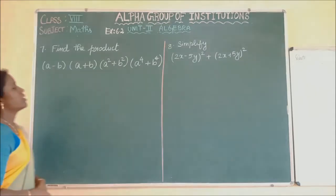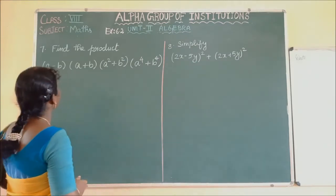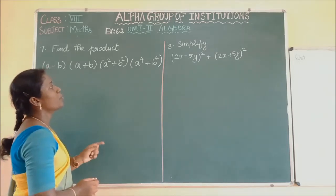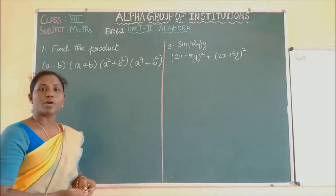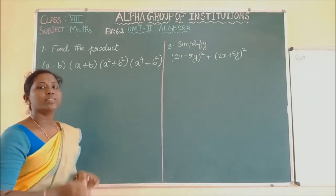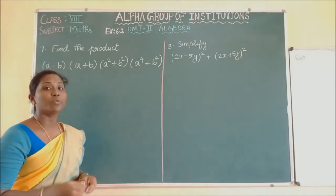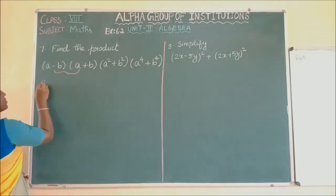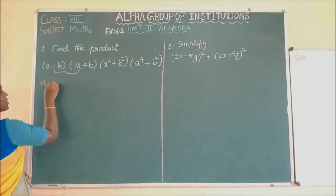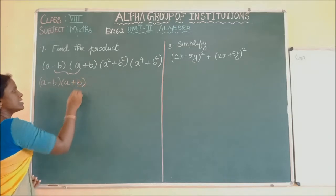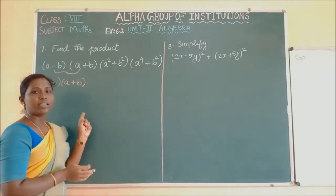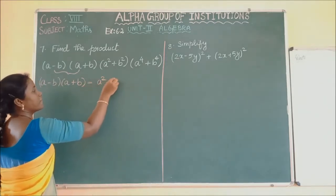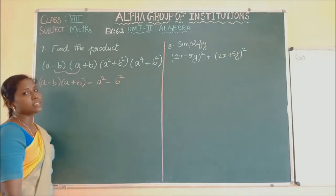Now we will solve the seventh problem: find the product of A minus B into A plus B, A square plus B square, A power 4 plus B power 4. We have to find this continued product. Looking at the first two factors, A minus B into A plus B directly equals A square minus B square using the identity.